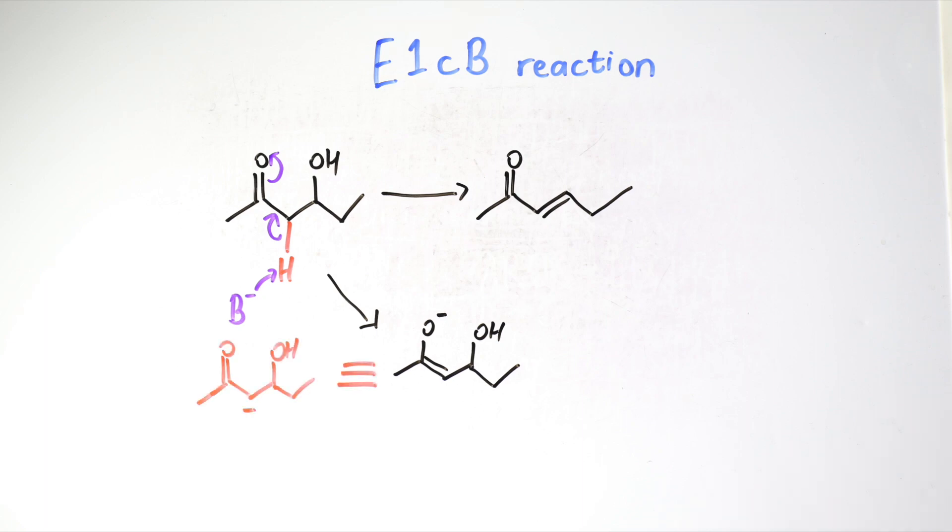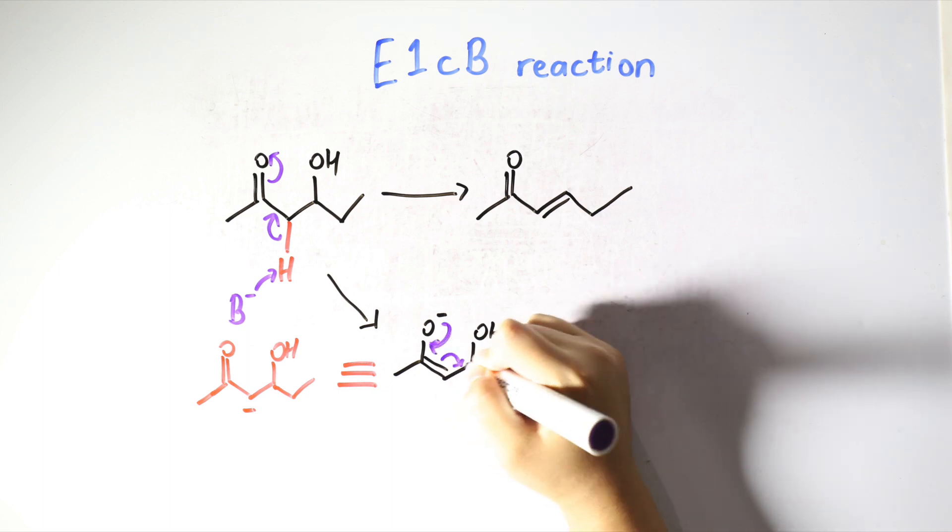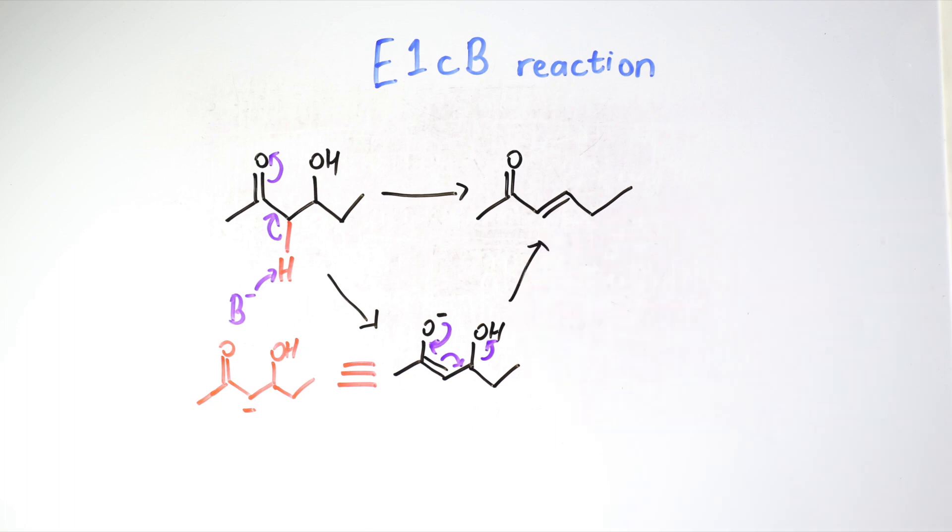This anion can also be represented in the carbonyl form, though it is less realistic. In the next step, although this anion is stable, it still prefers to lose a leaving group. Thus the electron movement now pushes the hydroxyl group to leave the molecule, forming this double bond.